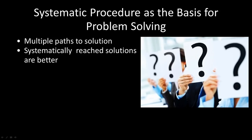One of the first things we should discuss at the outset is the importance of using a systematic procedure as the basis for problem solving. A reminder from Chapter 2 is that there are a wide variety of paths that can lead us to a solution, and the paths that are systematically reached tend to lead to solutions that are better for the outcome of the group.